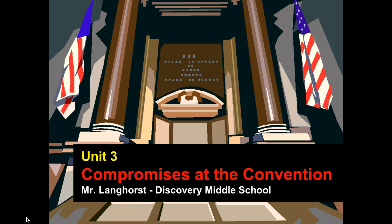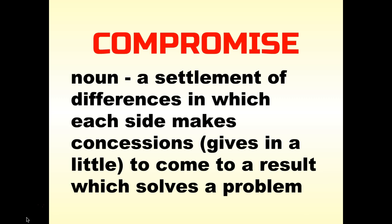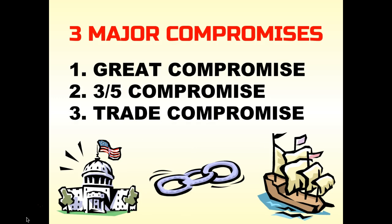Welcome to another section of our unit three notes. Today we're going to talk about compromises at the convention and break down some of the major issues and compromises that the delegates in Philadelphia had to reach to come up with the Constitution. A compromise is a settlement of differences in which each side makes concessions — essentially gives in a little bit — to come up with a result that solves a problem. Not everybody gets exactly what they want.